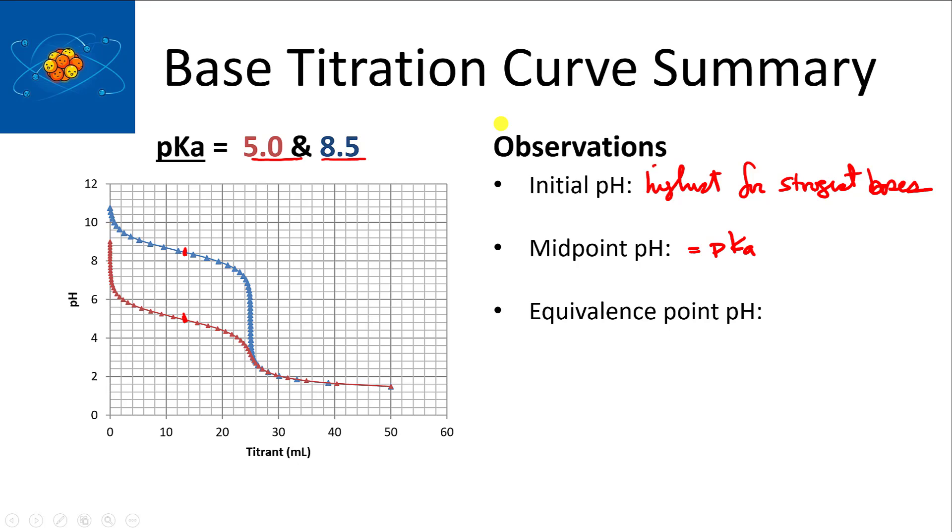The equivalence point pH - lower pKa means lower equivalence point pH. And again, if it's a strong base being titrated by a strong acid, it'll be 7. But in all other instances, the pH is going to be lower for the lower the pKa of the bases.